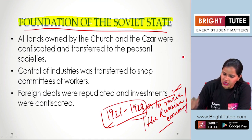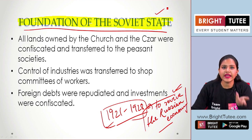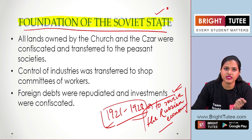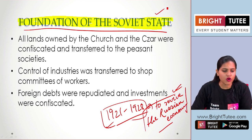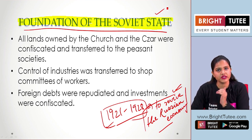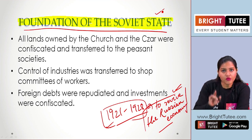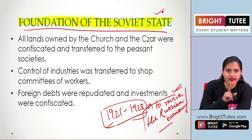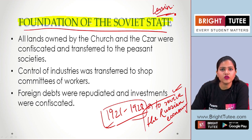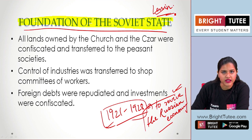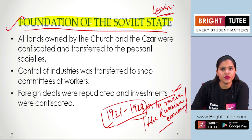We have also learnt about what happened after the revolution ended in Russia. So what happened after the October and the February Revolution here in Russia? Lenin took the power — he took control of the government in Russia. Therefore, we see the foundation of the Soviet state.